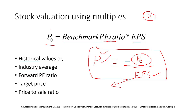Another approach is to find the industry average P/E ratio — for example, if Engro Fertilizer belongs to the fertilizer sector, we find the average P/E of that industry and use it in the formula P0 = Benchmark P/E × EPS to estimate the intrinsic value of the stock. The key idea is to use the P/E ratio formula to find the current fair price of the stock.